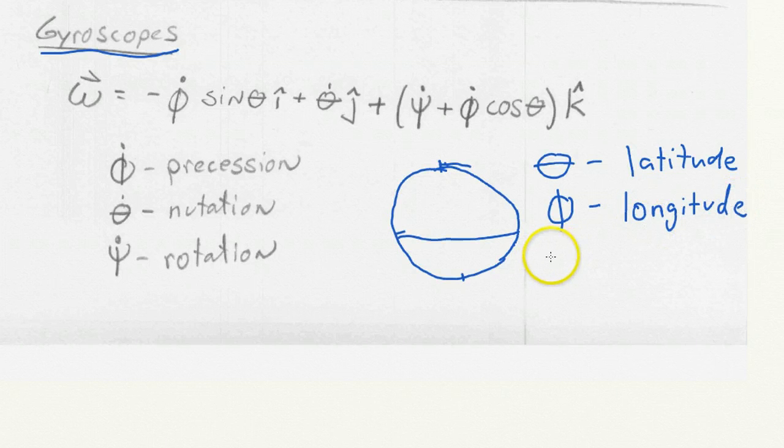And then the final angle is psi. And psi just has to do with the spin. So really we talk about psi dot and that's the rate of rotation. So along with the earth analogy it would be the rotation rate of the earth.